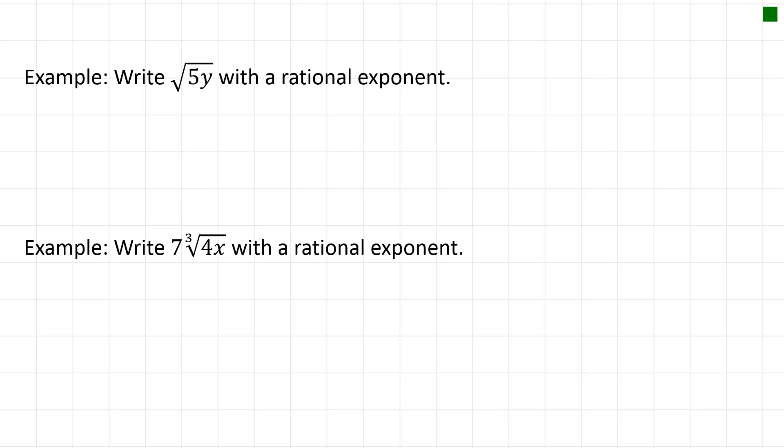We can also go the opposite way. We can write a radical with a rational exponent, and rational just means fraction. So the square root of 5y equals 5y to the power of 1/2. Again, no index there means it's actually a 2, so it's 5y to the power of 1 over 2.